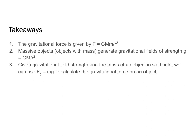So let's talk about our takeaways. The gravitational force is given by Fg equals GMm over R squared. Massive objects generate gravitational fields with strength g equals GM over R squared. And if we know gravitational field strength and the mass of an object in said field, we can use Fg equals mg to calculate the gravitational force on that object. So there you have it — this is your introduction to gravity. Please make sure you watch the other videos as well, because they go into gravity with a bit more depth and cover some more difficult scenarios. Best of luck and happy solving.